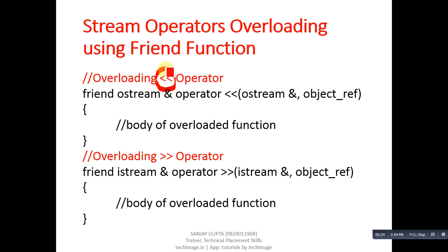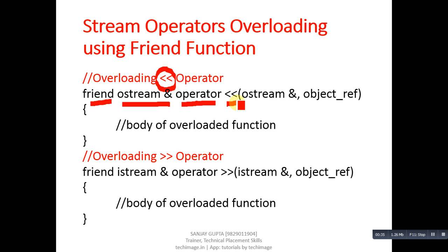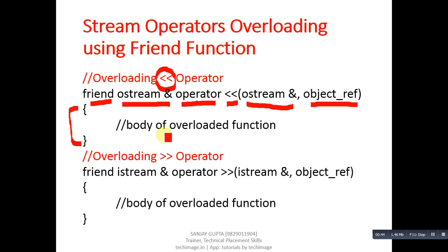The first operator is the insertion operator. In this definition, 'friend' is a keyword, and ostream reference is used for the return type. Here ostream is the name of the predefined class, then the operator keyword, then the insertion symbol, then ostream reference and object reference. Inside the curly braces the body of the function will be provided.